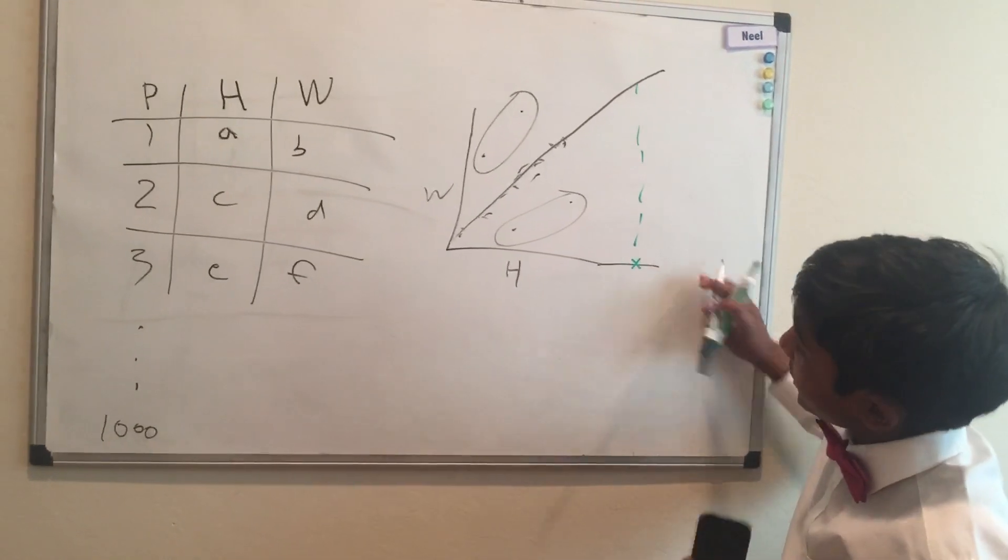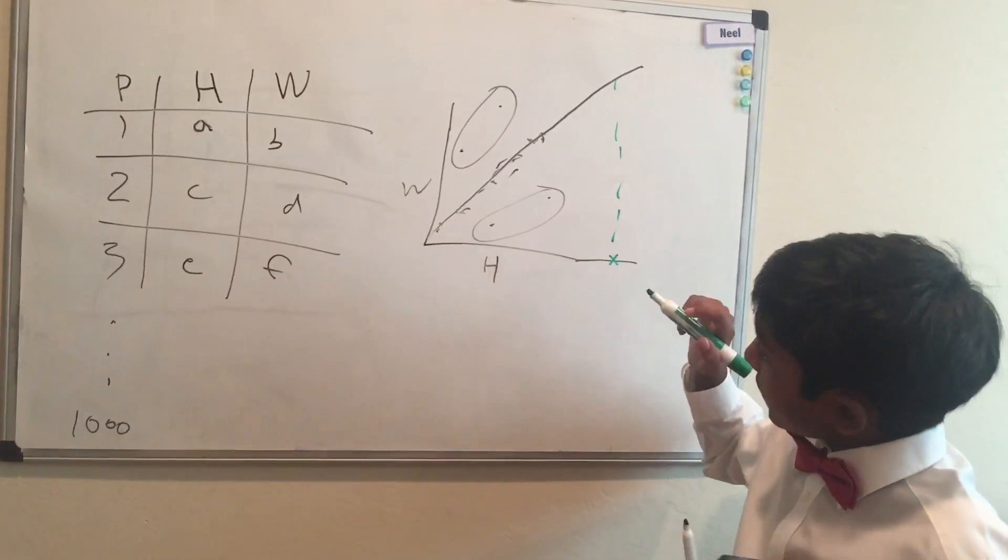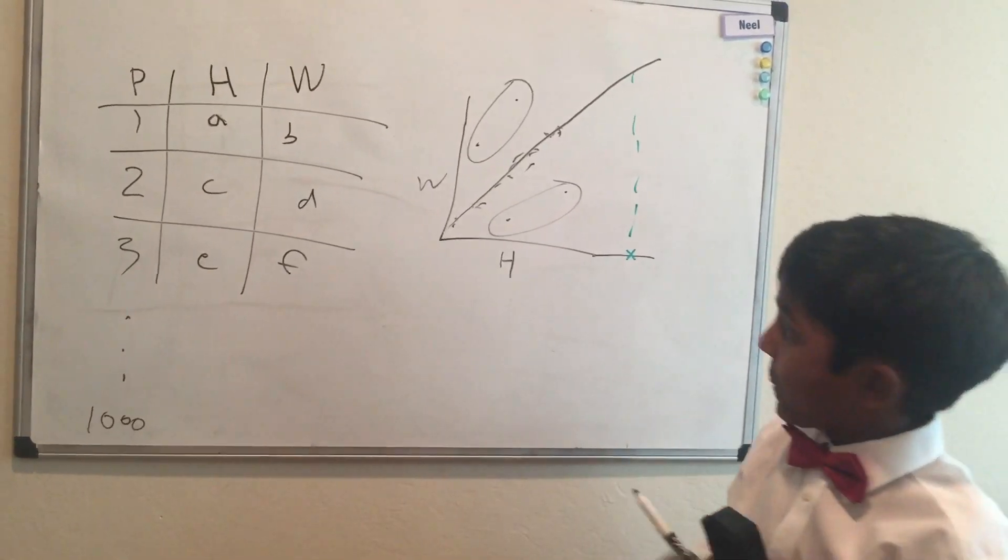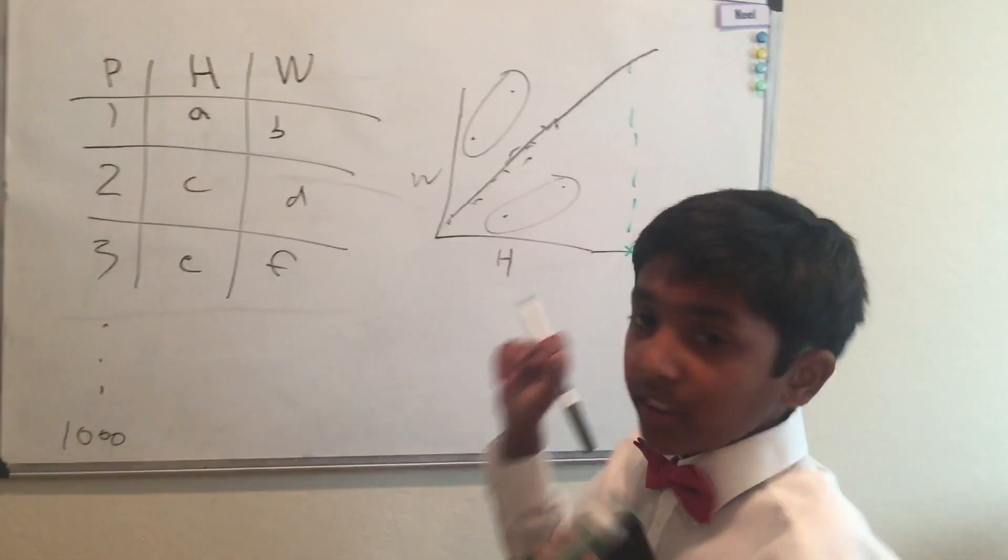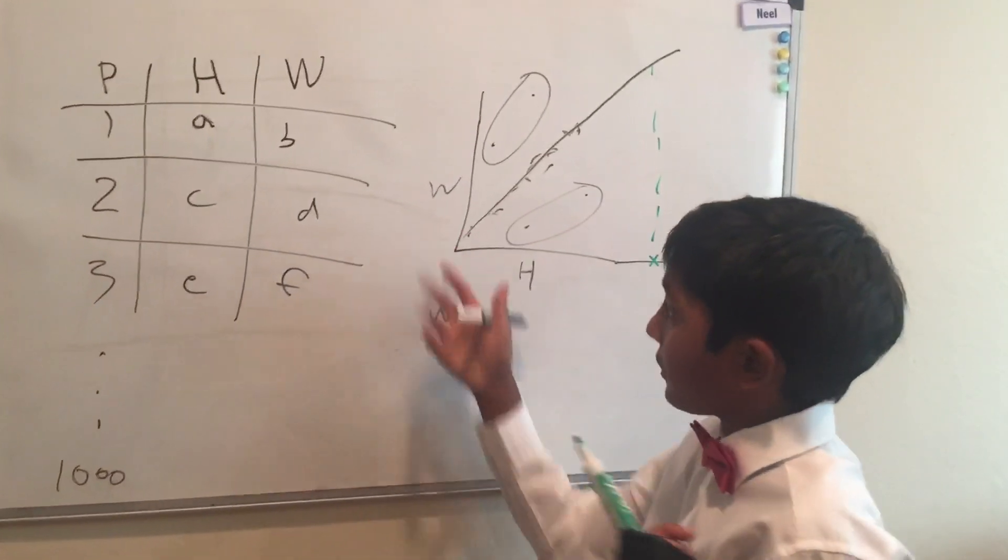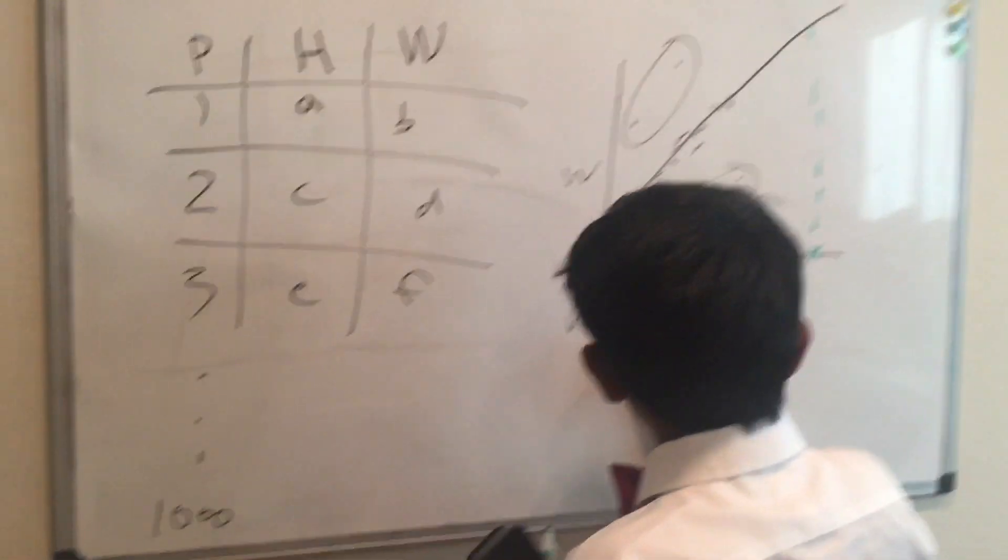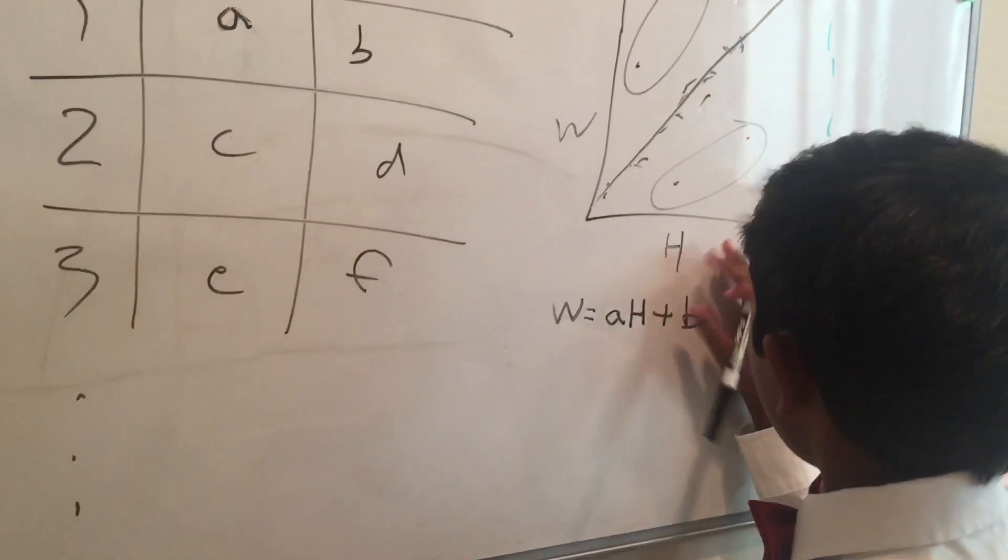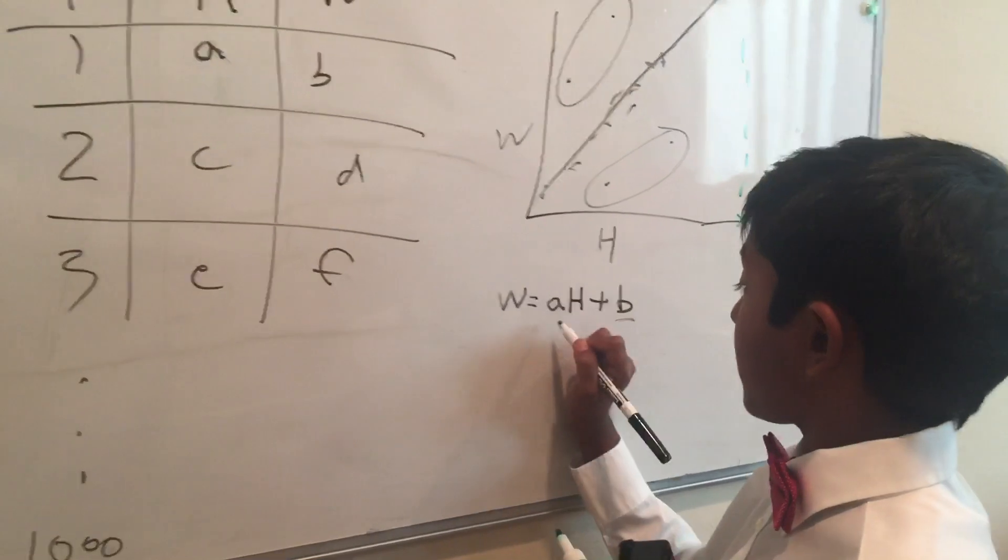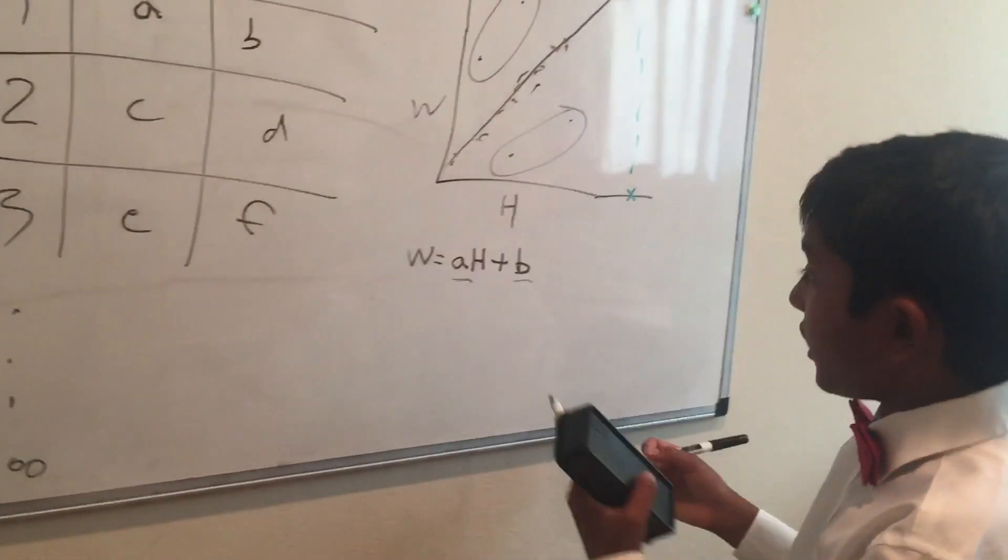Now what the problem is, is how do you get this line? Well, to have this line, the equation for this line is, whatever the weight is, equals a times the height plus b. a and b are constants that you generate to fit your data set.